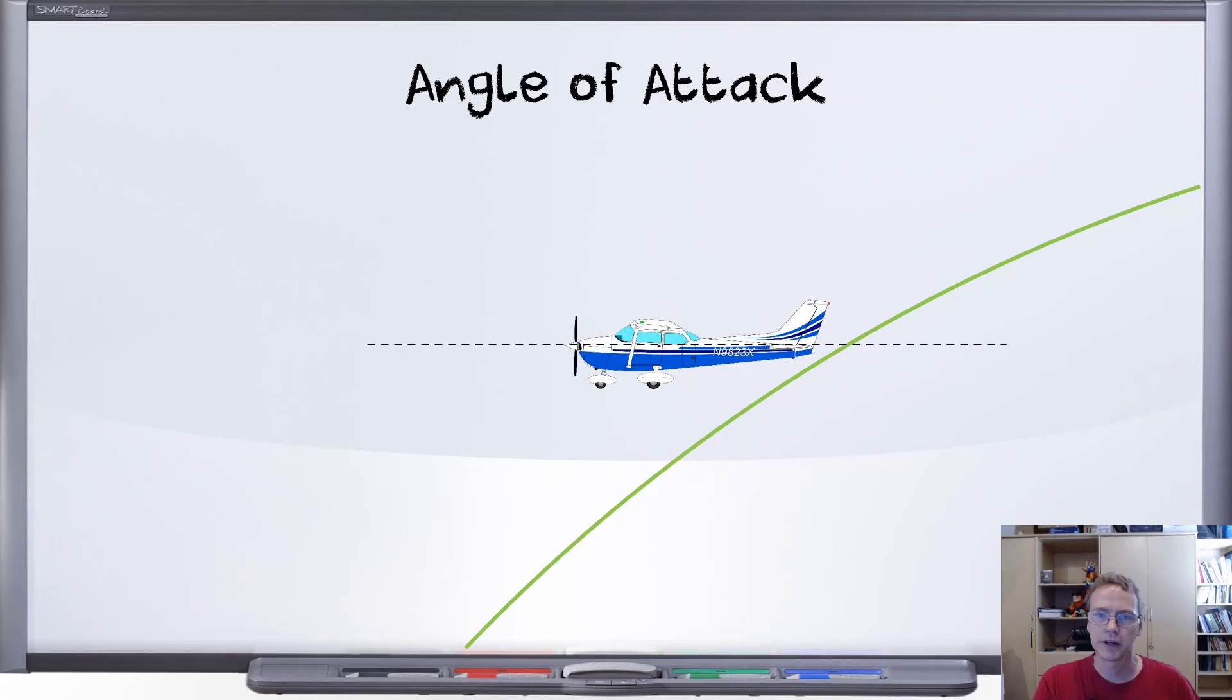This is the direction the aircraft is pointing, so if you said the angle of attack looks about zero, then I understand where you're coming from, but no, that's not the answer I'm looking for. Remember that the aircraft is actually flying parallel to the surface, and that is in this diagram in that direction. So assuming the air is relatively still, the wind will be coming up towards the aircraft from below like so, and if we look at that angle, that is the angle of attack alpha right there. So we can see this aircraft is flying with its nose very high.